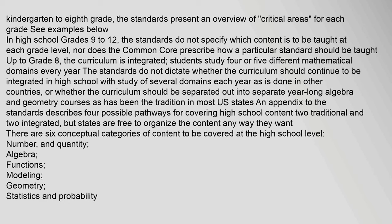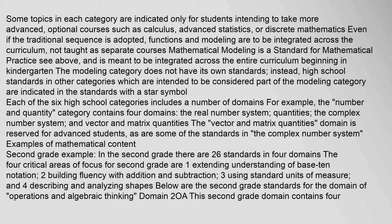There are six conceptual categories of content to be covered at the high school level: number and quantity, algebra, functions, modeling, geometry, and statistics and probability. Some topics are indicated only for students intending to take more advanced optional courses such as calculus, advanced statistics, or discrete mathematics. Even if the traditional sequence is adopted, functions and modeling are to be integrated across the curriculum. Mathematical modeling is a standard for mathematical practice and is meant to be integrated across the entire curriculum beginning in kindergarten. High school standards intended to be part of the modeling category are indicated with a star symbol.